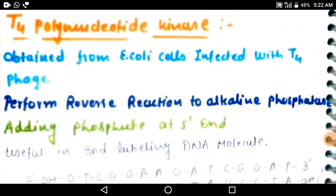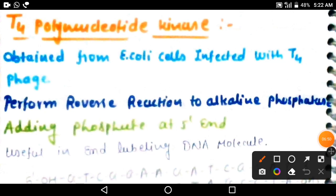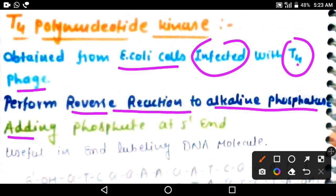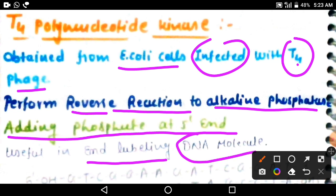The third example of the end modification system enzymes is T4 polynucleotide kinase. T4 polynucleotide kinase is obtained from E. coli cells infected with T4 phage. We extract this enzyme from E. coli infected with T4 phage. It performs the reverse reaction to alkaline phosphatase — alkaline phosphatase removed the phosphate group from the 5 prime end, so T4 polynucleotide kinase adds the phosphate group at the 5 prime end. This is very useful for end-labeling DNA molecules.